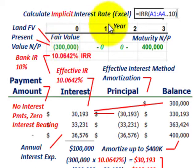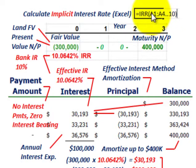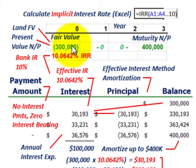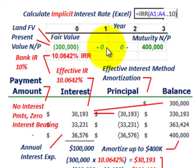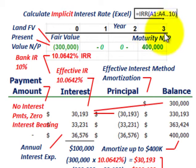To find the implicit rate, we can use a financial calculator or Excel's IRR (internal rate of return) function, inputting a range of cash flow values. We have three years laid out: at the beginning of year one, we input the fair value of the land received — $300,000 — which is also the present value of the notes payable. For years one and two there are no cash flows, and at the end of year three we have a $400,000 outflow.